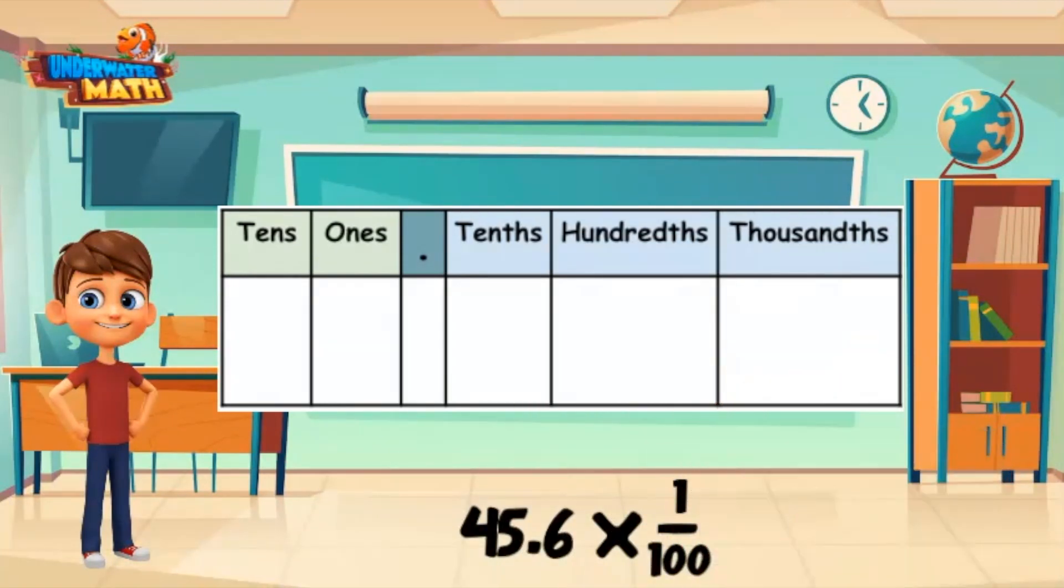This is because one-tenth times one-tenth is one-hundredth. If you move two place values to the right, you have multiplied by one-hundredth.